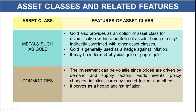Metals such as gold provide an option of asset class for diversification within a portfolio. Gold is generally used as a hedge against inflation — it may be in the form of physical gold or paper gold. Gold generally provides returns a little higher than the prevailing inflation rate, so it is better to invest in gold if you want to beat the inflation rate and prevent the value of your money from decreasing. If you don't want the risk of keeping physical gold which could be stolen, you can trade in paper gold or invest in gold-related asset classes through mutual funds.